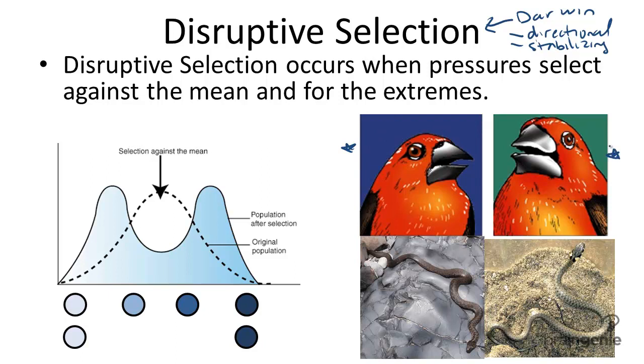As opposed to eliminating the extremes of a population, such as what you would notice in stabilizing selection, here's the mean of a population. This mean or average trait in the population is disrupted.